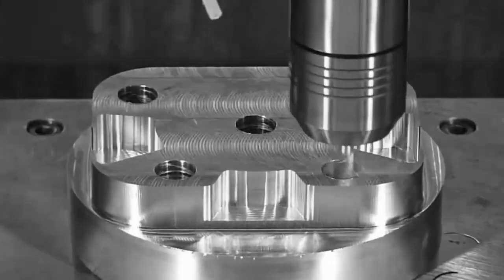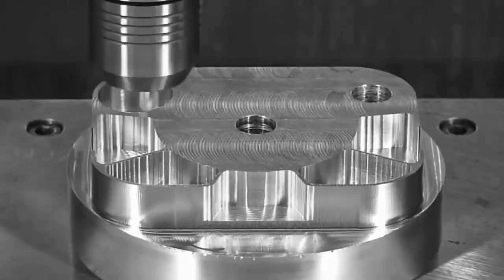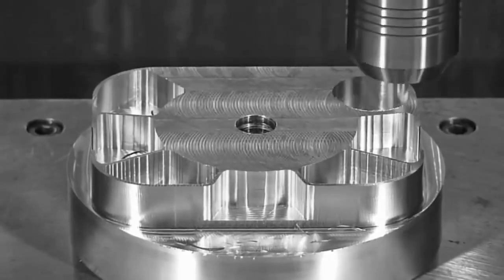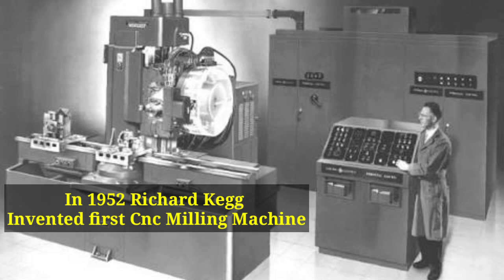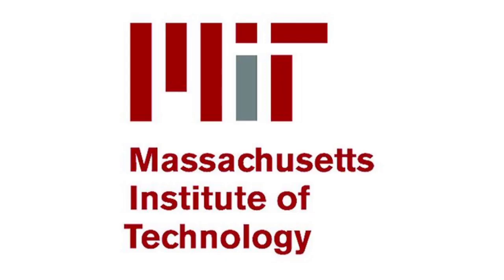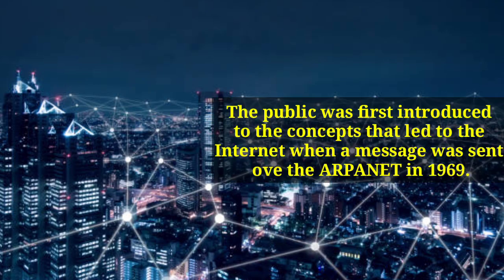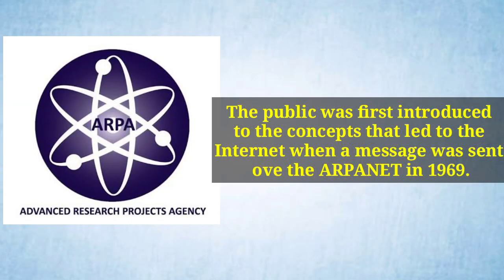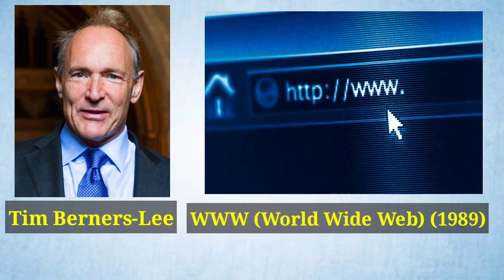इसका सबसे बढ़िया उदाहरण है NC — Numerical Control Machine — जिसमें Machine Tools का Automation किया गया, जिसे हम आज CNC Machine के रूप में जानते हैं। इसकी शुरुवात 1950 के दशक से हुई, जब 1952 में Richard Kegg ने MIT के साथ Collaboration करके दुनिया की पहली CNC Milling Machine का आविष्कार किया। Internet का आविष्कार ARPANET — Advanced Research Project Agency Network — द्वारा 1989 में Internet के माध्यम से पहला message send करके किया गया। इसके बाद 1989 में Tim Berners-Lee ने WWW — World Wide Web — का आविष्कार किया था।